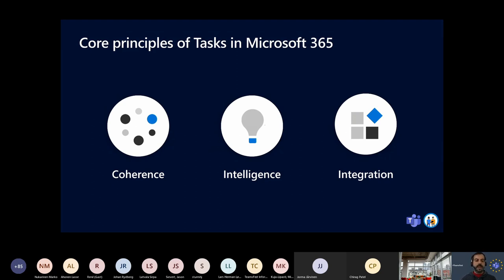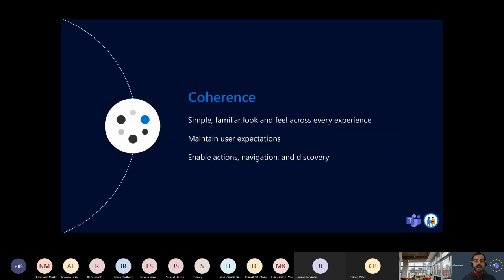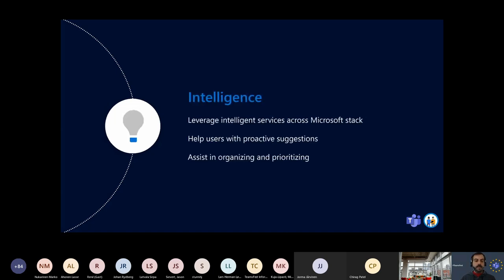Let's talk about each of these pillars. Coherence: the idea is that we have to work with tasks in the same way, no matter if we are using a mobile phone, our laptop, or our desktop PC, and no matter the application. The way we create, update, or complete tasks should be the same. With this, we are ensuring that we meet user expectations and providing actions, navigation, and discovery capabilities when working with tasks across all apps and services.